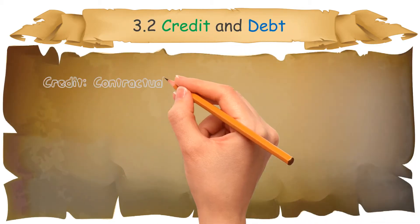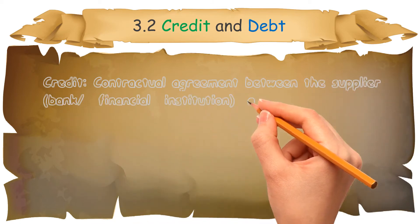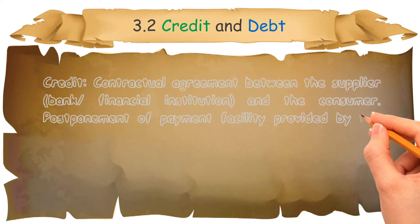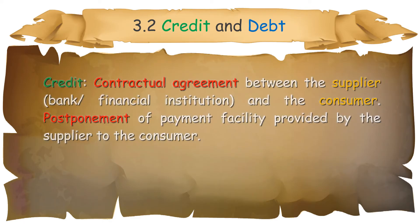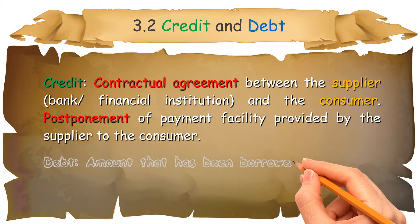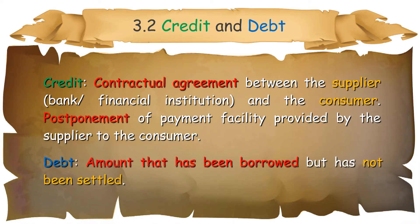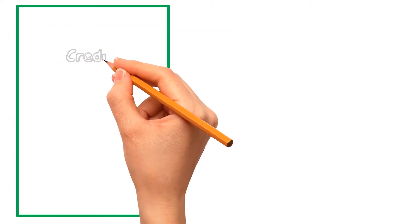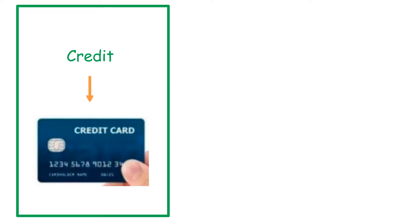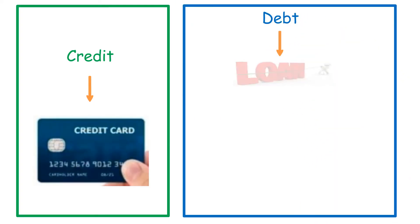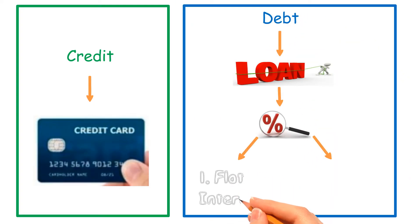Credit is a contractual agreement between the supplier, bank or financial institution, and the consumer — a postponement of payment facility provided by the supplier to the consumer. Debt is the amount that has been borrowed but has not been settled. An example of credit is using a credit card, while debt involves a loan, which has flat interest or interest on balance.